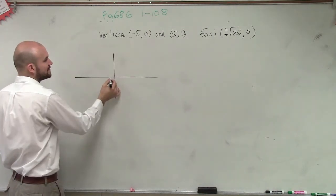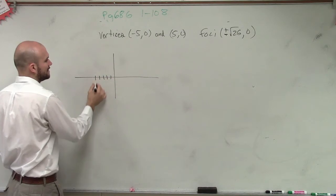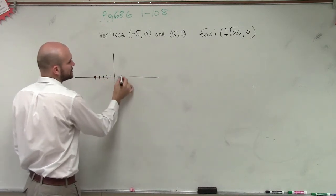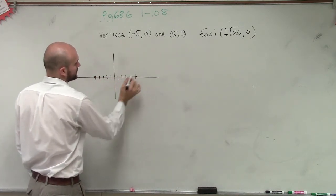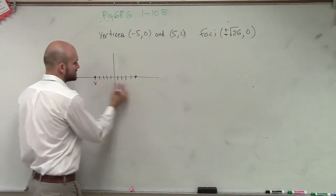So vertices at negative 5, 0, 1, 2, 3, 4, 5, and 5, 0, 1, 2, 3, 4, 5. So those are your two vertices.